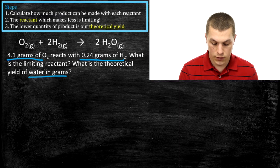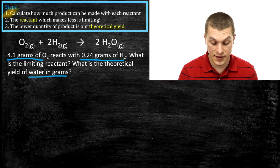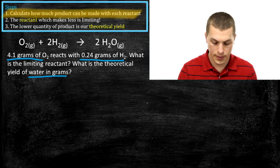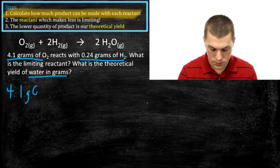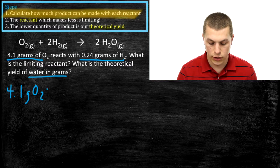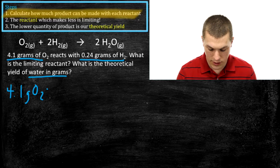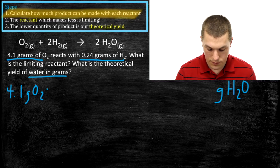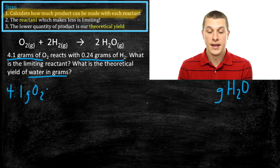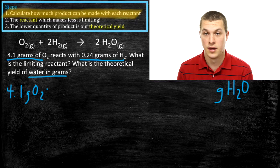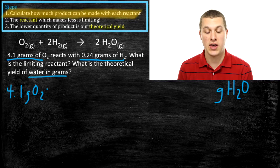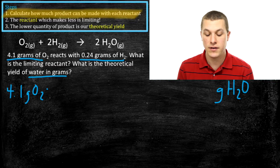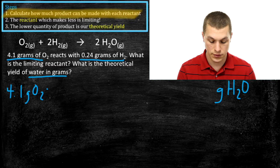We're going to do the same thing: calculate how much product we can make in grams from each reactant, starting with our 4.1 grams of O2. The first thing we need to do when starting with grams is convert to moles, because our chemical recipe is in terms of moles. Think about it this way: if I said you had 200 grams of bread, how many sandwiches can you make? You can't figure it out because you need to know how big each slice is. The same way, when you have 4.1 grams of oxygen, you can't figure out how much product you can make unless you first convert to moles.